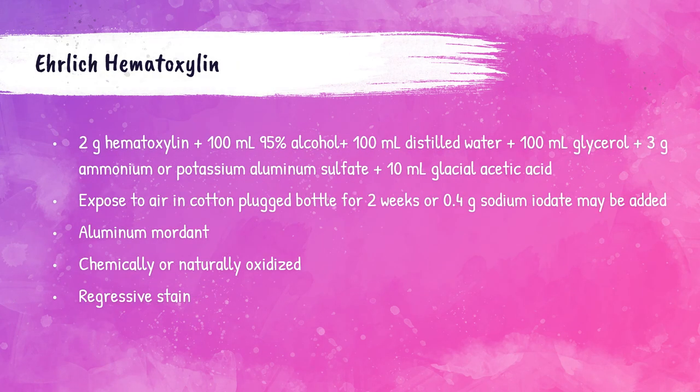Ehrlich hematoxylin is created by dissolving 2 grams of hematoxylin in 100 mL of 95% alcohol. Once dissolved, 100 mL distilled water, 100 mL glycerol, 3 grams of ammonium or potassium aluminum sulfate, and 10 mL of glacial acetic acid are added. The mordant is aluminum. It can be oxidized by adding 0.4 grams of sodium iodate, or placed in a cotton-plugged bottle for two weeks. Ehrlich hematoxylin is used as a regressive stain.